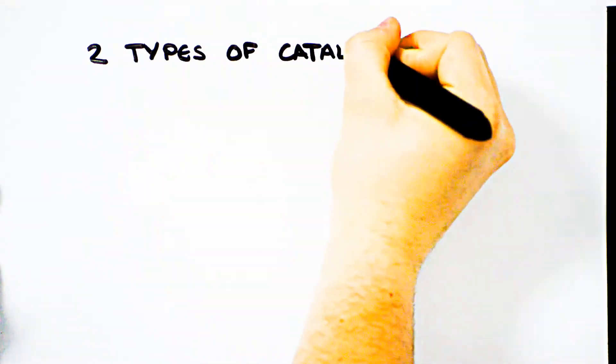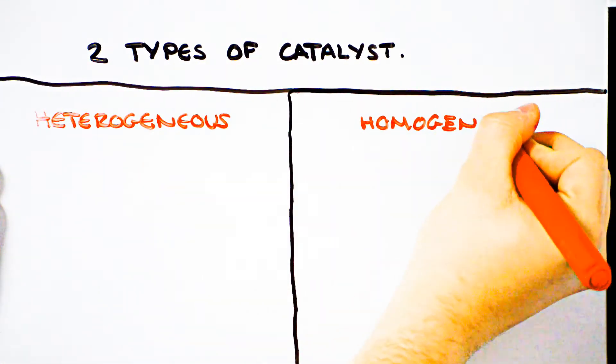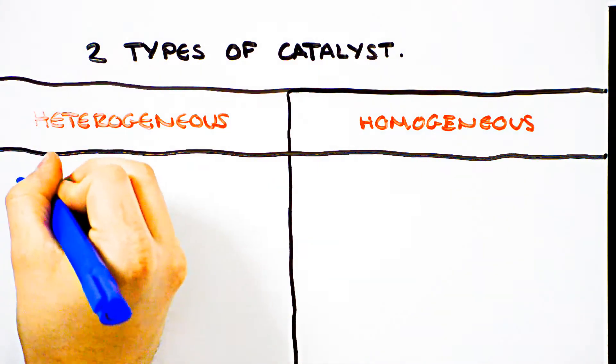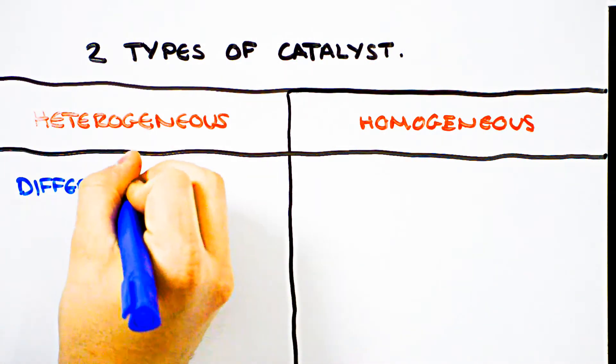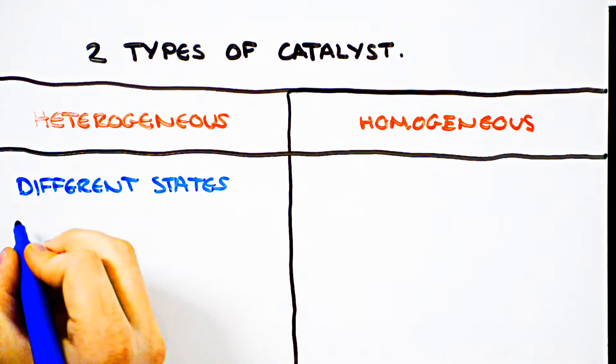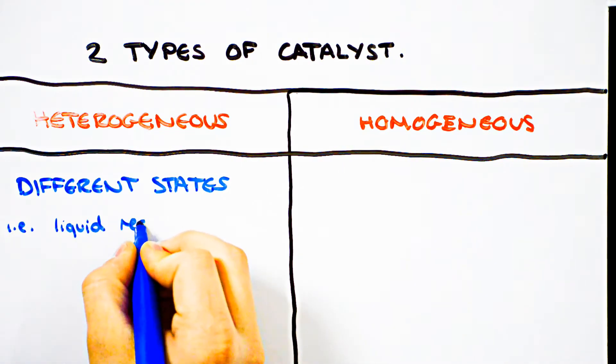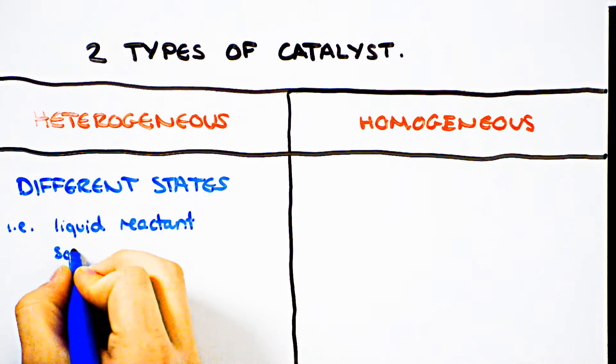There are two types of catalysts you may encounter, heterogeneous and homogeneous. Hetero, meaning different, means that the catalyst and the reactants are in two different phases. For example, a gas-phase reactant is placed over a solid-state catalyst, usually at high temperatures and pressures.